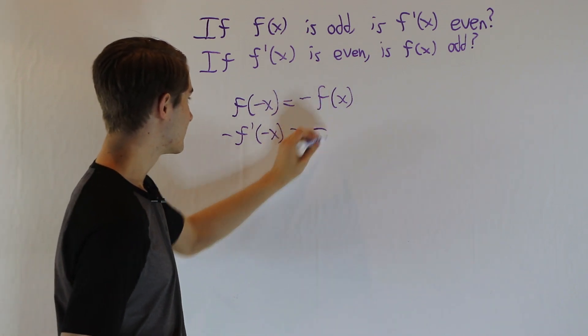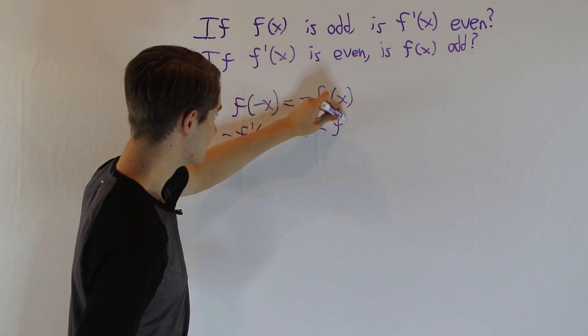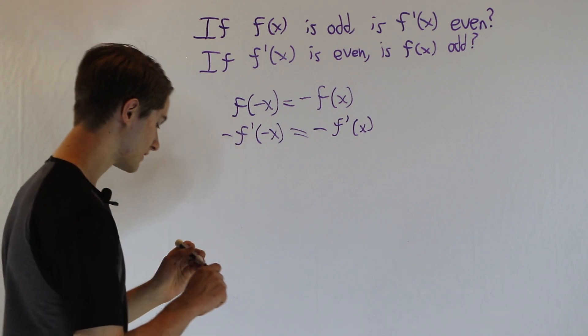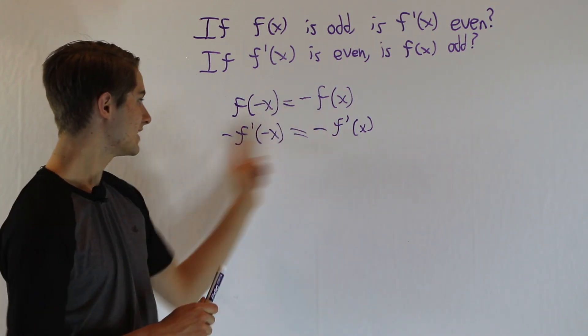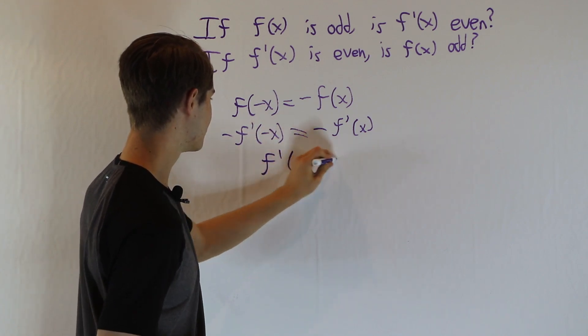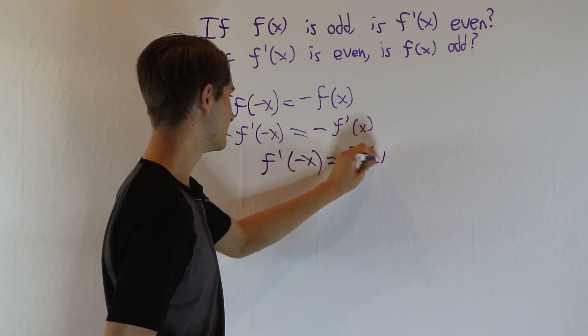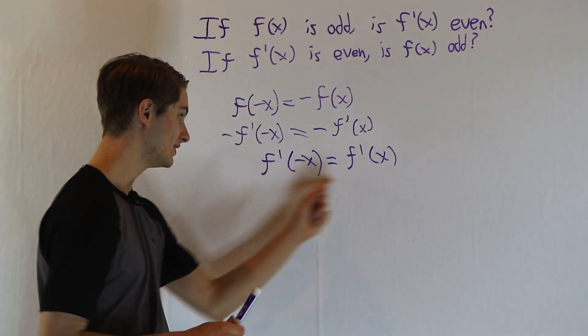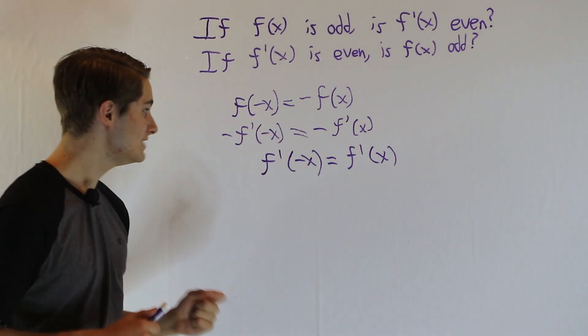And then we look at the other side. Negative 1 is just a constant, and then the derivative of f is f prime. So what we see is we have a negative on both sides. We can divide that out, and we get f prime of negative x equals f prime of x. And in fact, this is the definition of an even function.